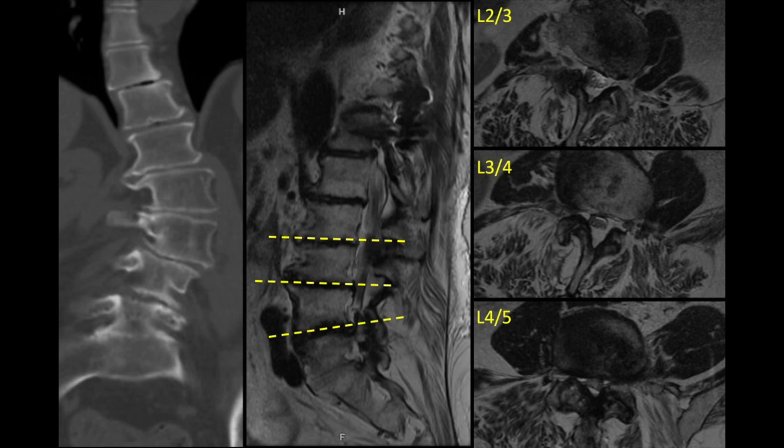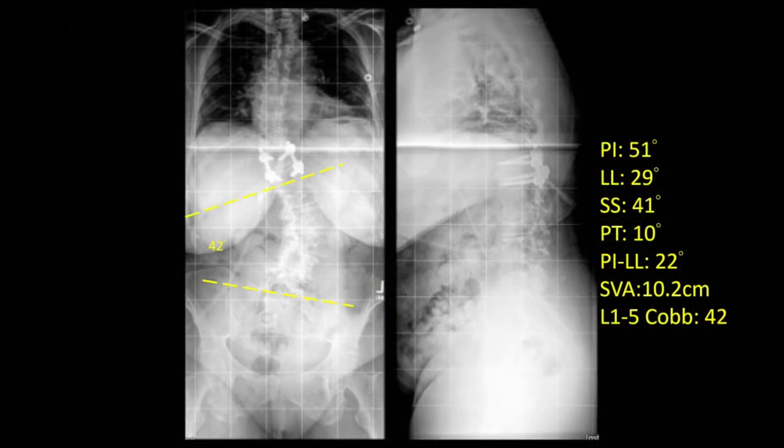On the right are the MRI images demonstrating the axial cuts through L2-3, L3-4, and L4-5. Here you can see the long-standing x-rays demonstrating the patient's deformity.